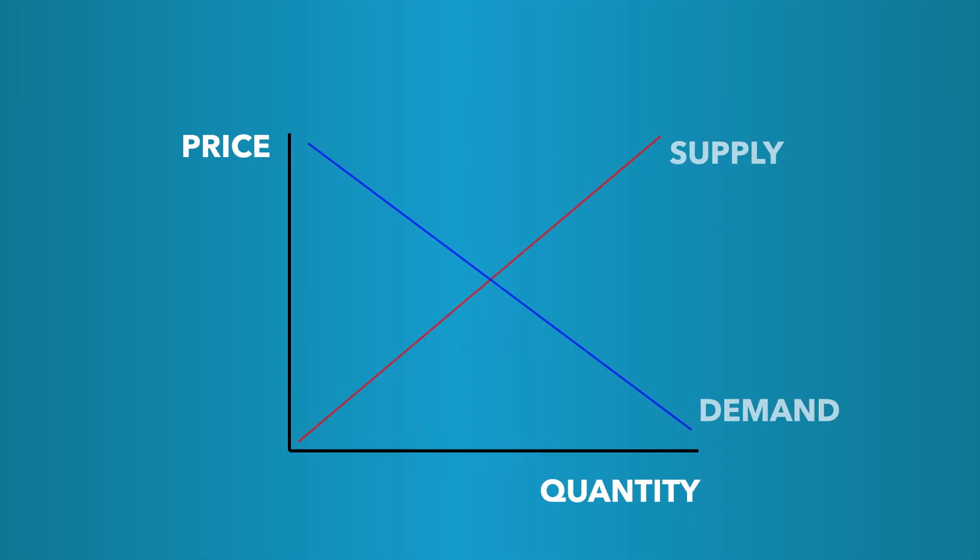A key function of the market is to provide the equilibrium price. Equilibrium occurs when supply and demand are in balance. At this price, the goods supplied are equal to that which is demanded, thereby bringing about the most efficient allocation of the goods.